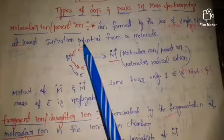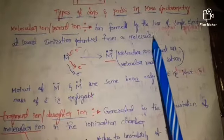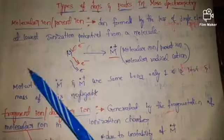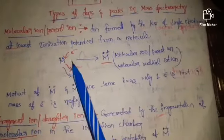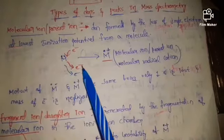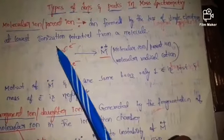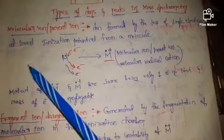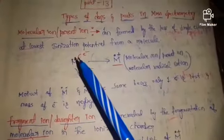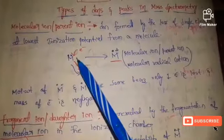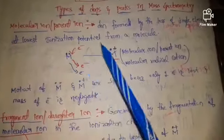Molecular ion or parent ion is the ion formed by the loss of a single electron at the lowest ionization potential from a molecule. Ionization energy or ionization potential means the energy required to remove an electron from the atom or the molecule. Here the process is the loss of a single electron from a molecule at lowest ionization energy.